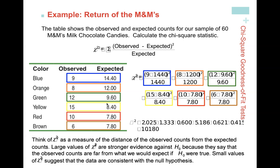For each color — blue, orange, green, yellow, red, brown — you calculate (observed − expected)² / expected. For blue: (9 − 14.4)² / 14.4, and so on. These are added together. As chi-square gets bigger, it gives more evidence against H-null because your observed are quite far from expected. As chi-square is smaller, there's not much difference between what you got and what you expected, which is evidence for the null.